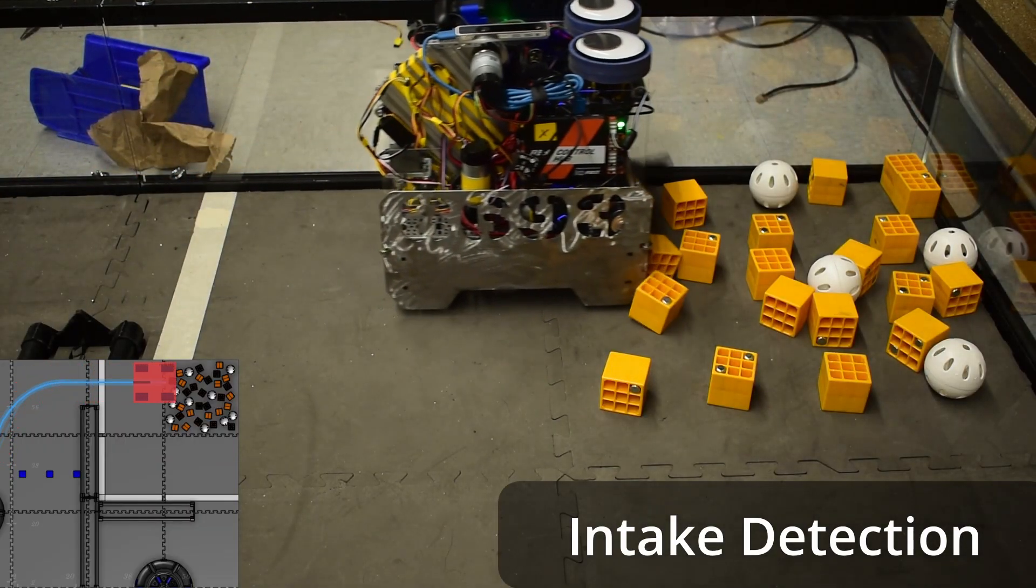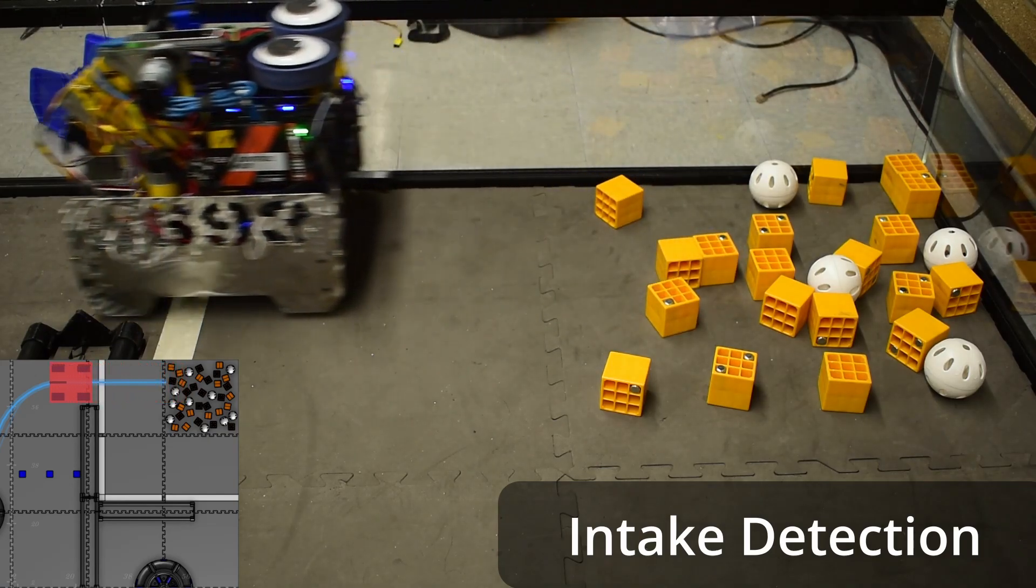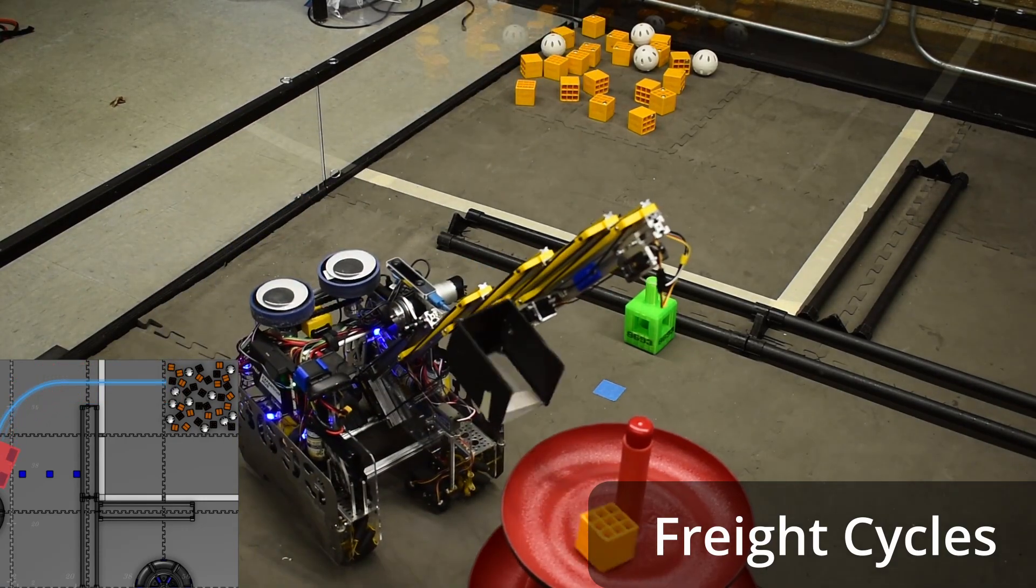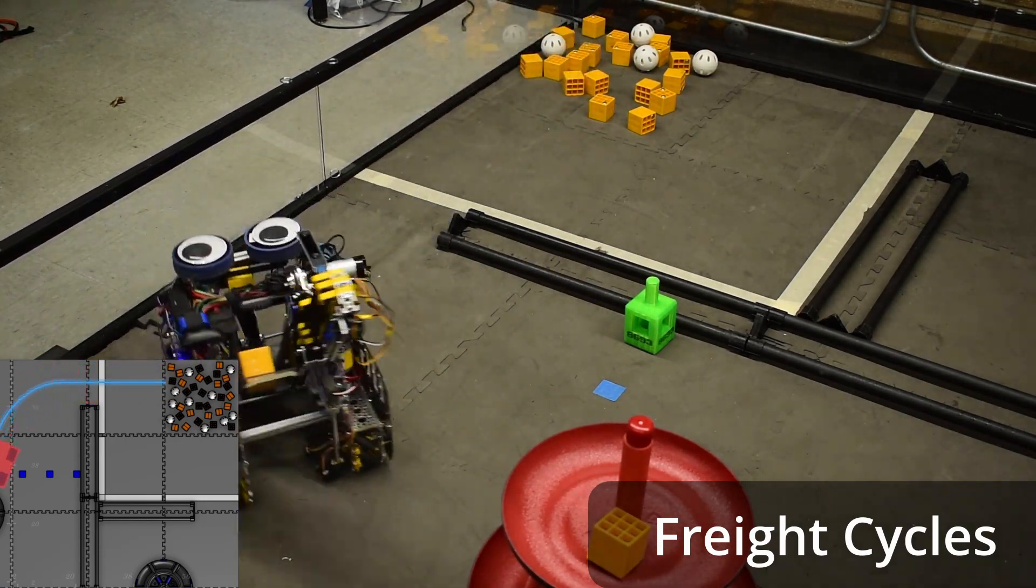Looking for spikes in the motor's current draw allows us to determine when a piece of freight has entered the intake. On the freight side, the robot is able to reliably cycle two freight onto the Alliance shipping hub.